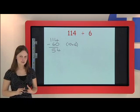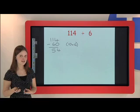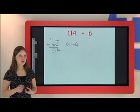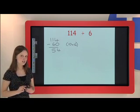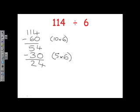I think again, we need a big number in the 6 times table that I can take away from 54. This time 10 times 6 doesn't go, but I know that 5 times 6 is 30, so I'll try that. I take away 30 and write next to it 5 times 6. Then I do the subtraction. 4 minus 0 is 4, and 5 minus 3 is 2. I'm left with 24.